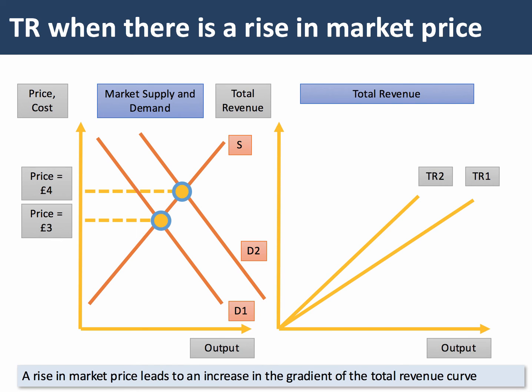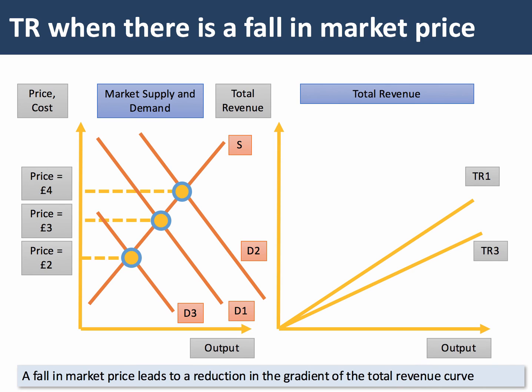Increasing the price in the market causes an upward pivot in the total revenue curve. And of course, price can also go down. If the price goes down to £2, the total revenue curve will shift from TR1 to TR3 — the gradient of the total revenue curve decreases.